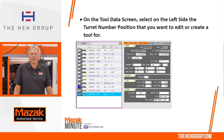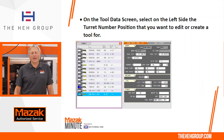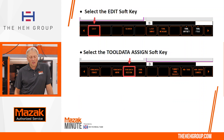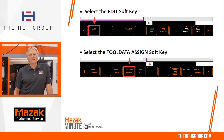From there on the tool data screen you're going to see it's broken up into two sections. On the left side you're going to have the turret numbers and the descriptions of the tools, and on the right side you're going to have the description of the current tool selected. In order to edit one of the tools you'll first highlight the tool that you want to edit, then go down onto the soft keys, select edit, and then finally go to tool data assign.